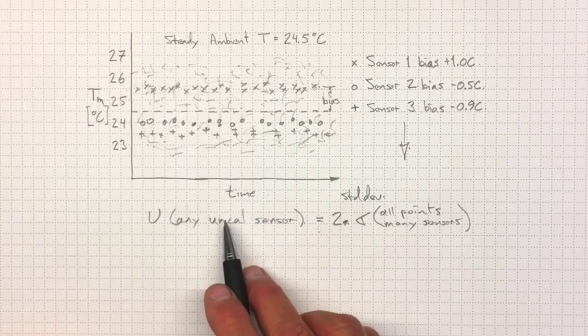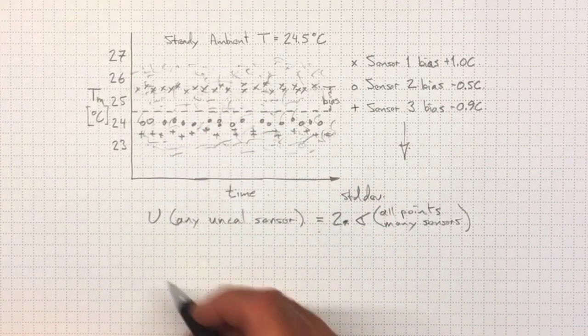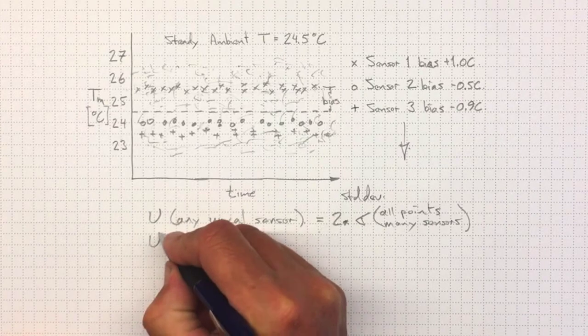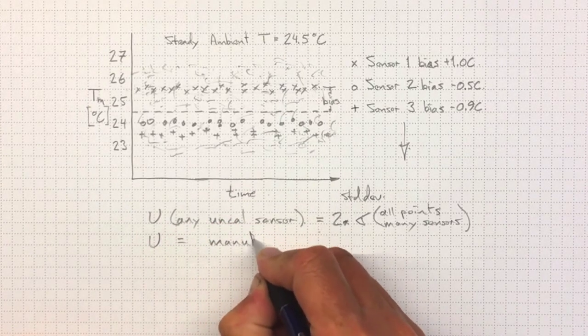More reasonably, you might depend on the manufacturer to have already done this and to go and get that uncertainty from the manufacturer's data sheet. And that's what the value on the data sheet means.